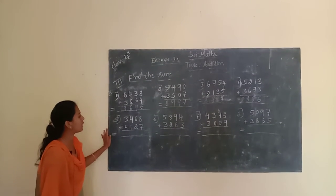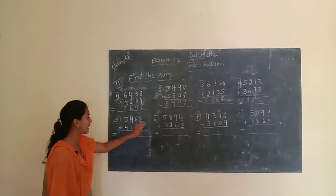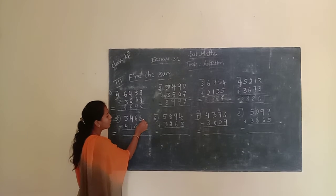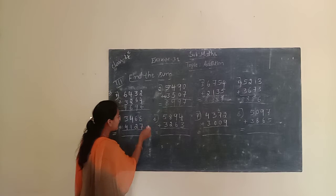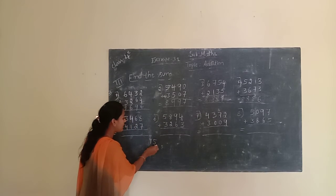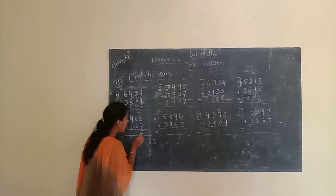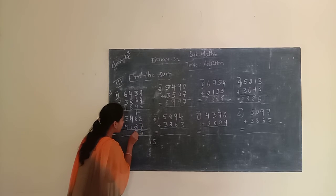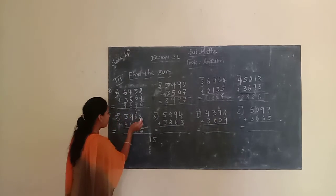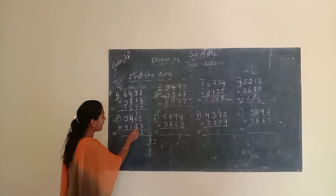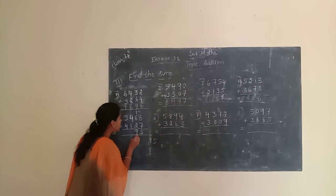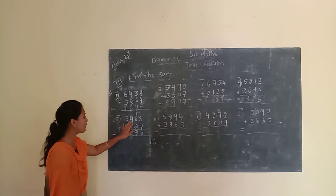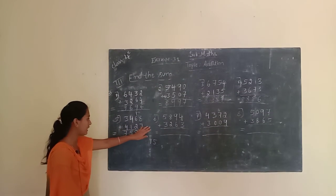Next, give one more example. The given number is 3,468 plus 4,127. First, we have to start at the unit place. Unit place is 8 and 7. 8 plus 7 is 15. 5 is the unit place digit, 1 is the 10th place carry. We have to write 5 in the unit place, carry 1. Then 6 plus 1 is 7, and 7 plus 2 is 9. Next, move to the 100th place. 4 plus 1 is 5. Then 3 plus 4 is 7.